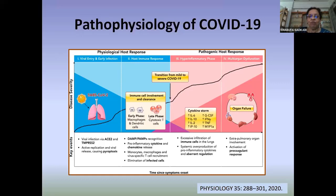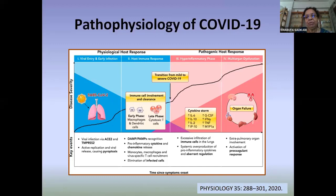The first line of defense involves monocytes and macrophages, followed by T-cell recruitment. There is a release of pro-inflammatory cytokines and chemokines into the circulation. If the host response remains adequate, the infection will be contained within a certain time.